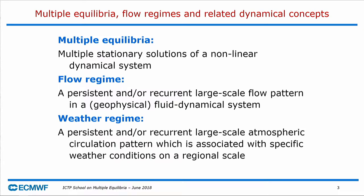A related concept is flow regime, which is basically a persistent, recurrent large-scale flow pattern in a geophysical fluid dynamic system. Multiple equilibria usually refers to stable fixed points, but in reality the atmosphere-ocean system is continuously moving. What you may have are stationary states which are not stable but weakly unstable, with orbits around those stationary states, so the flow has configurations which are very similar for some period and then suddenly switch to a different configuration.